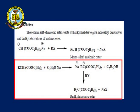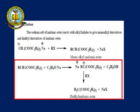This alkylation reaction continues until the alpha hydrogens are no longer available. In malonic ester, there are two alpha hydrogens, so it can accommodate two alkyl groups, leading to formation of the dialkyl malonic ester compound. If no alpha hydrogens remain, no further alkylation takes place.